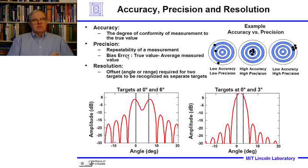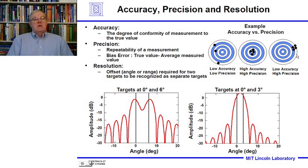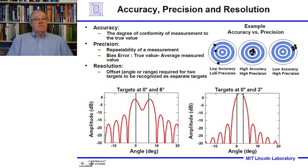Precision refers to the repeatability of measurements. The bias error is defined as the true value minus the average of the measured values. If the average of the measured values are all clustered together, we have high precision. An example on the right shows bullets with very high precision but low accuracy — there is a significant bias error. The center example shows both high accuracy and high precision: hitting very close to where we want to, repeatedly.